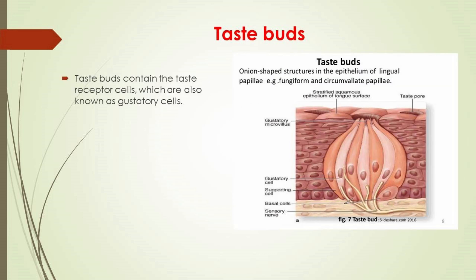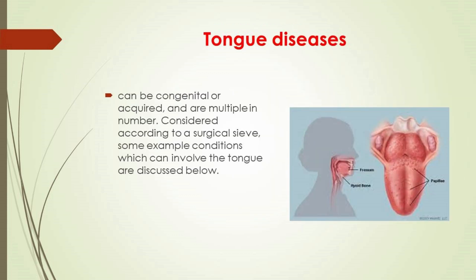Taste buds are onion-shaped structures in the epithelium of lingual papillae. They contain taste receptor cells, also known as gustatory cells. The taste receptors are located around small structures known as papillae, found on the upper surface of the tongue, soft palate, upper esophagus, the cheek, and epiglottis.